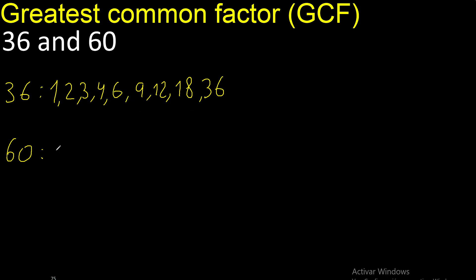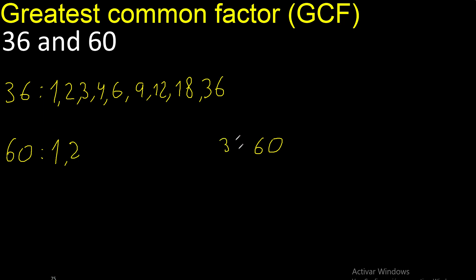Factors always start with 1. 60 divided by 1 is 60. Next, divided by 2 is 30. Divided by 3 is 20.